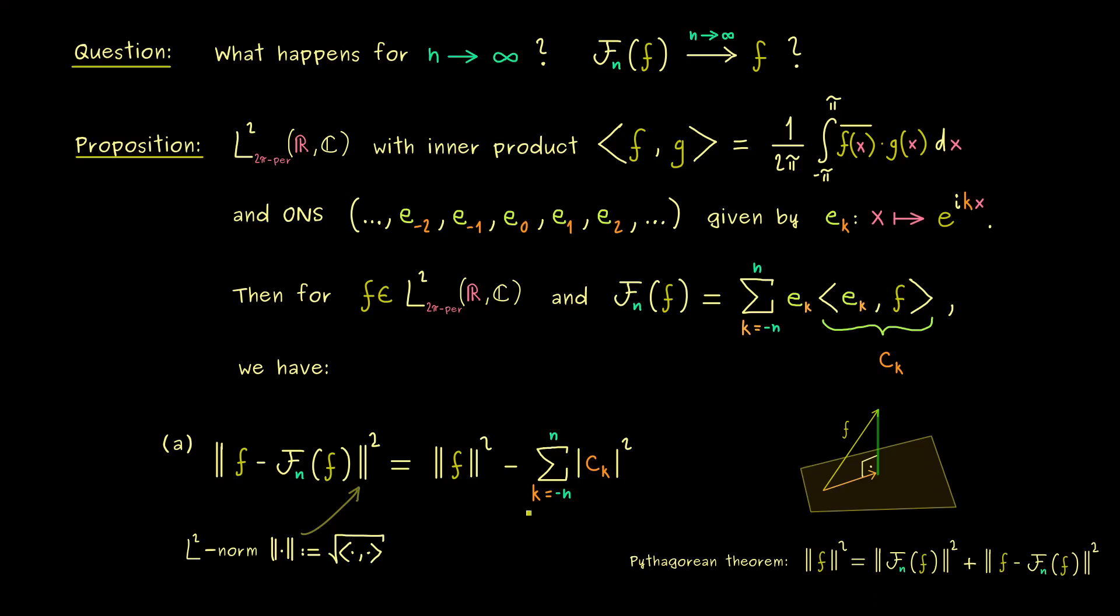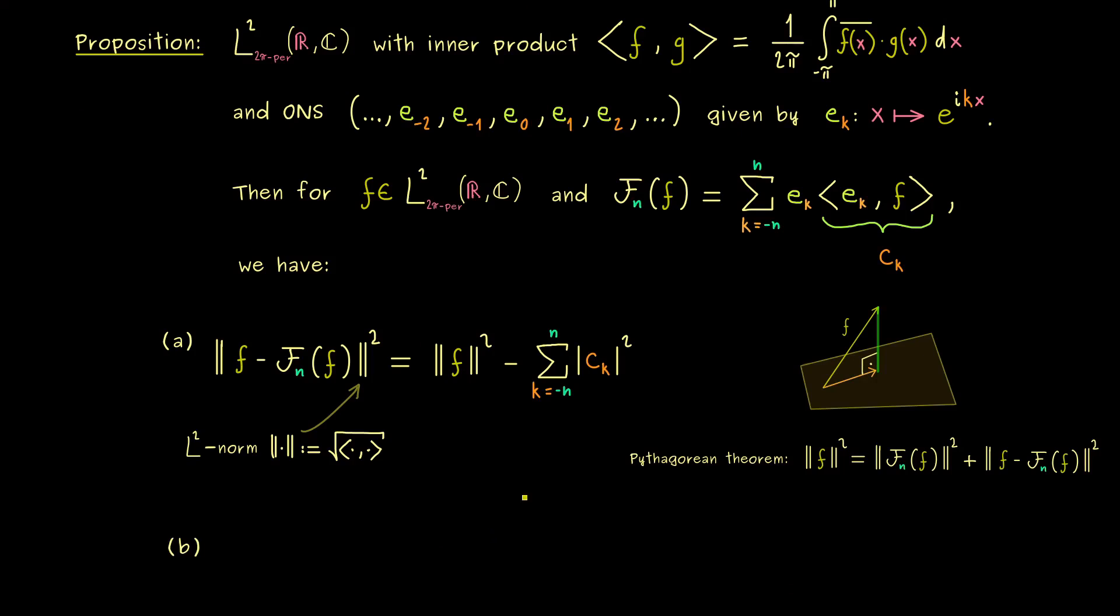So we have the length of the orthogonal projection squared here, plus the length of the normal component there. And then you see, we just need one subtraction on both sides to get the formula here. And of course, you have to calculate the inner product f_n of f with itself, but then you see it just results in that. Indeed, this is really simple because it just comes from the property of the ONS. So there we have it—this is already the proof of this general formula.